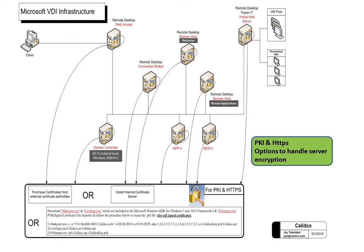These tools are included as part of the Microsoft Windows SDK for Windows 7 and .NET Framework 4. Using PVKImport with the XCert utility, these three utilities allow you to create your own self-generated certificates with your own private key for every server. Once you have a PFX file and a certificate on each server, that certificate can be exported from one server.